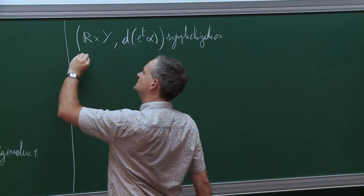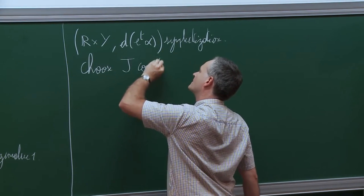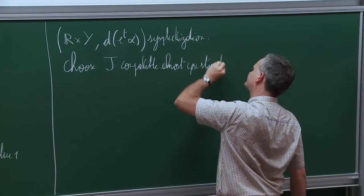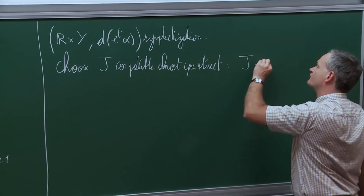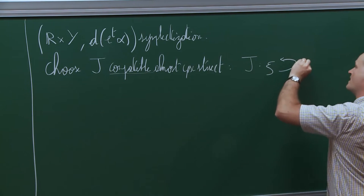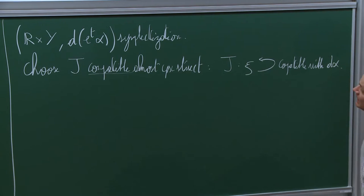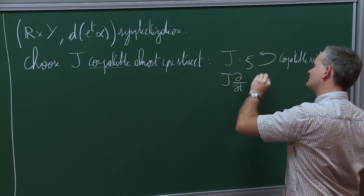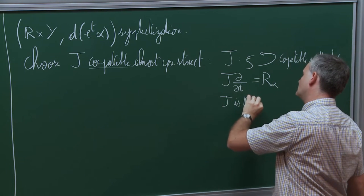On this symplectization, you can choose J to be a compatible almost complex structure with the following properties. The first property is that J preserves the contact distribution, and on it, that's the meaning of the word compatible here, it is compatible with the symplectic structure dα. Second, it maps the vertical direction ∂/∂t along the real line to the Reeb field of our contact form. Finally, J is invariant under translation along the real line.